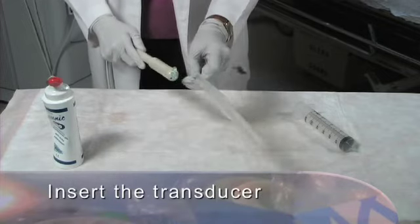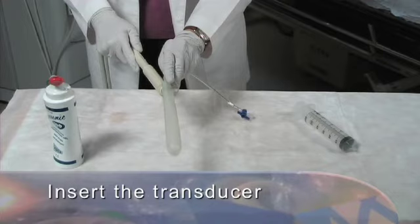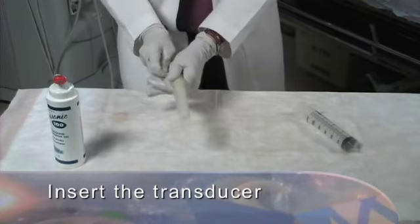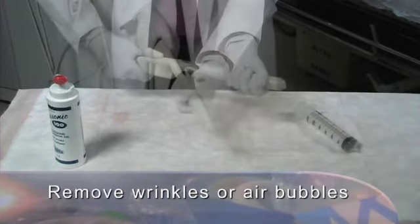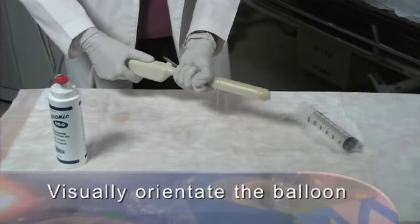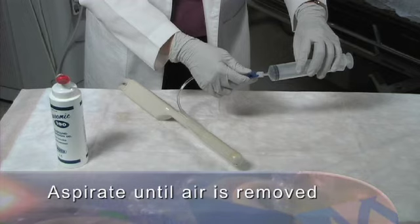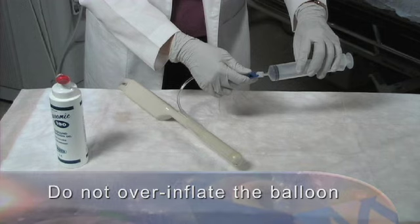Inserting the transducer into the balloon with the fill tube oriented in top center of the transducer. Pull the balloon tightly over the transducer face, removing wrinkles or air bubbles. Visually orientate the balloon so lateral seams are a symmetrical distance from the longitudinal array. Use a 30 cc syringe to fill the balloon with saline solution. Aspirate until air is removed. Do not over inflate the balloon.